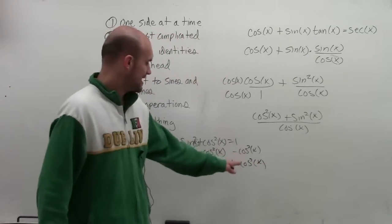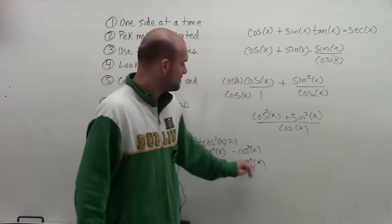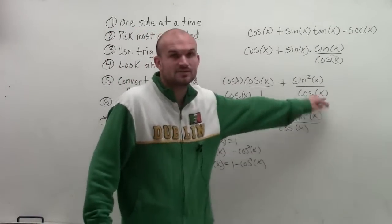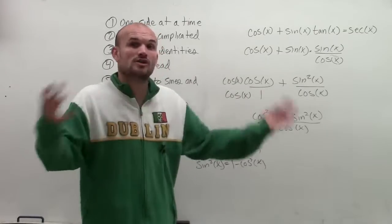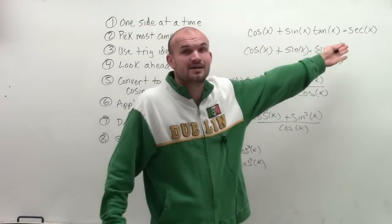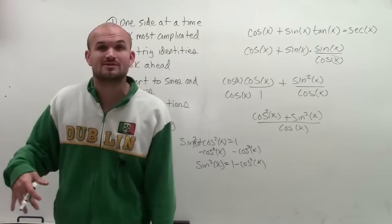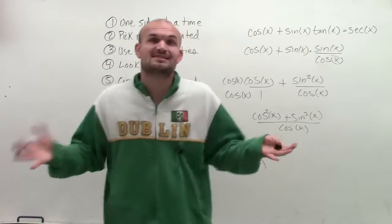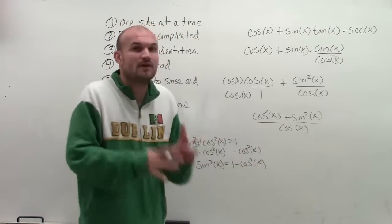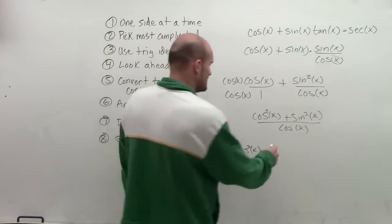The reason why I want to do that is because now I can plug in 1 minus cosine squared of x in for sine squared of x, eliminating all other sines. Because when you look on the right side, we know that secant is 1 over cosine, right? It has nothing. There's no sine or anything in there. So I want to get rid of any kind of form I have of sine.